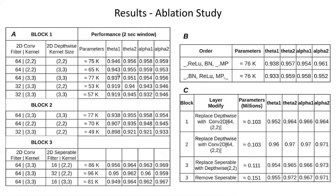We performed an ablation study. In Table A, we varied the filter and kernel size in all three blocks. The number of parameters ranged from 49K to 91K, and we observed performance changes with varying parameters. Even with 53K parameters in Block 1, we found significant performance above 90 percent in all frequency bands. This shows that our model can be further customized according to need.